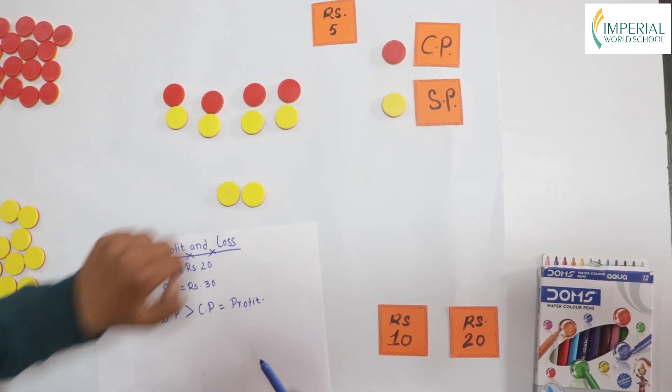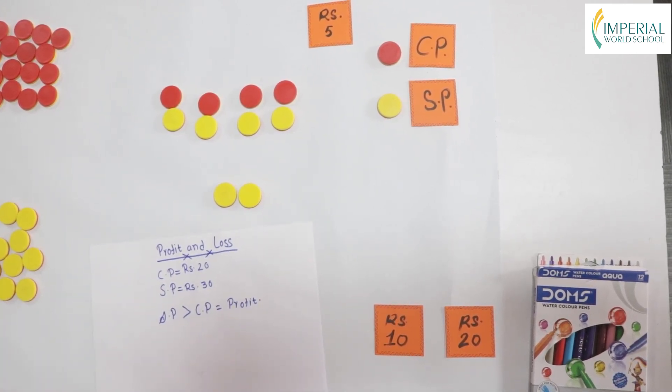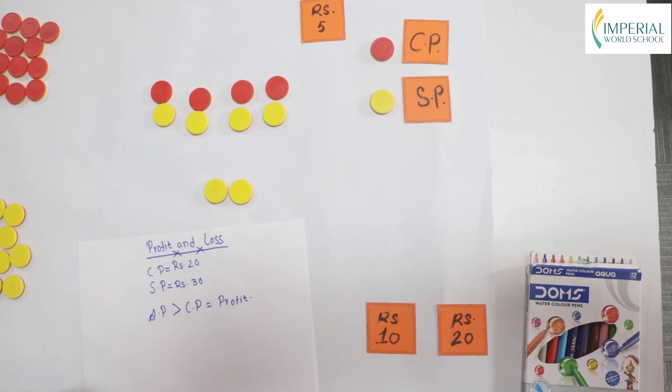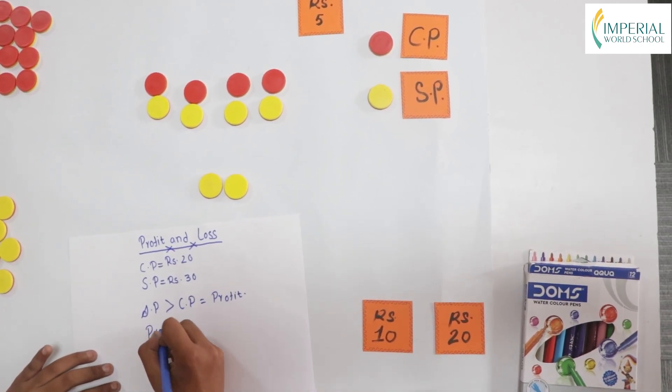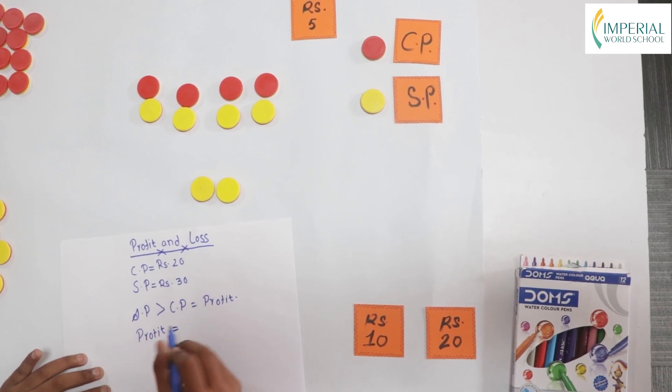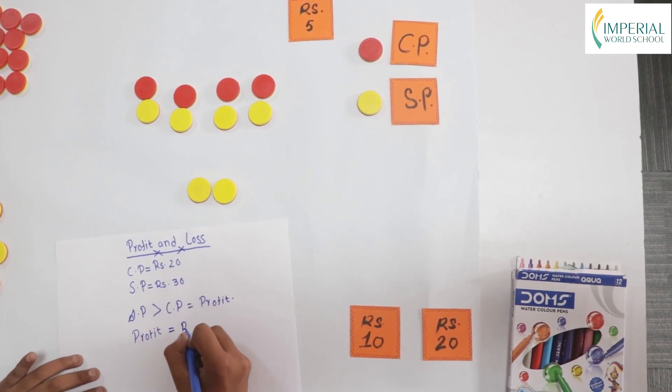We now have 2 tiles left and since per tile is rupees 5, 2 tiles is rupees 10. Our profit amount is 10.